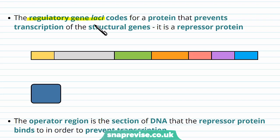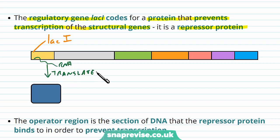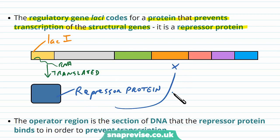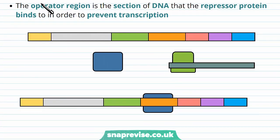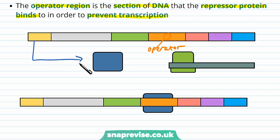We also have the regulatory gene lac I, located away from the operon. This gene codes for a protein which prevents the transcription of the structural genes — we call it a repressor protein. The lac I gene gets transcribed, RNA is made from it, and the RNA gets translated by the ribosomes into the repressor protein, which stops these genes from being transcribed and stops lactose metabolism from happening. Finally, the operator region is a section of DNA between the promoter and the structural genes, and this is where the repressor protein binds to prevent transcription.